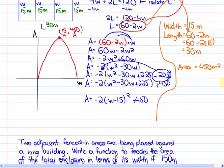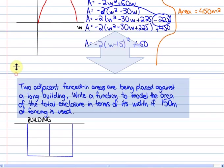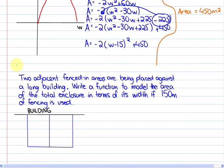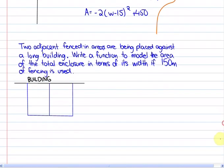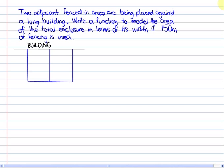In our second problem, I'm just going to come up with the quadratic function and not solve it. To solve it, it's much like example number one. This problem says two adjacent fenced in areas are being placed against a long building. Write a function to model the area of the total enclosure in terms of its width if 150 meters of fencing is used.